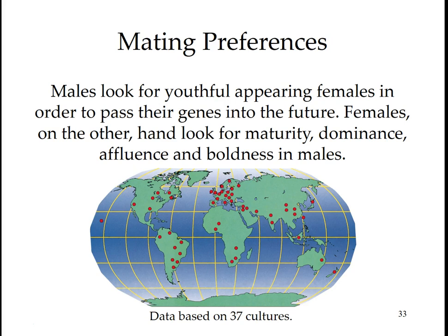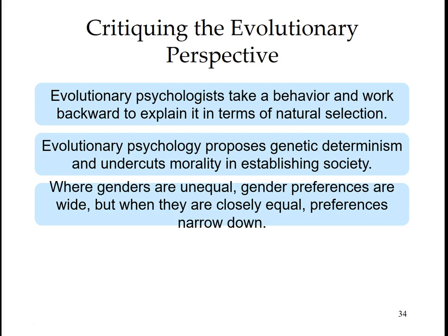Males look for youthful appearing females in order to pass their genes into the future, while females look for maturity, dominance, affluence, and boldness in males. Evolutionary psychologists apply principles of natural selection to explain why women's more relational and men's more recreational approaches to sex differ. Compared with eggs, sperm are cheap. While a woman cares for a single infant, a man can spread his genes by impregnating other females. Women most often send their genes into the future by pairing wisely, men by pairing widely. Women increase their own and children's chances of survival by searching for mates with economic resources and social status.